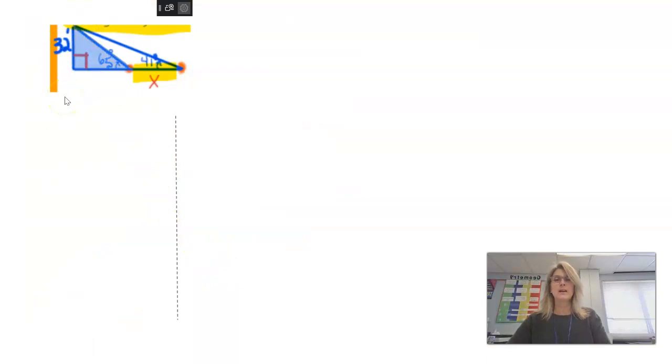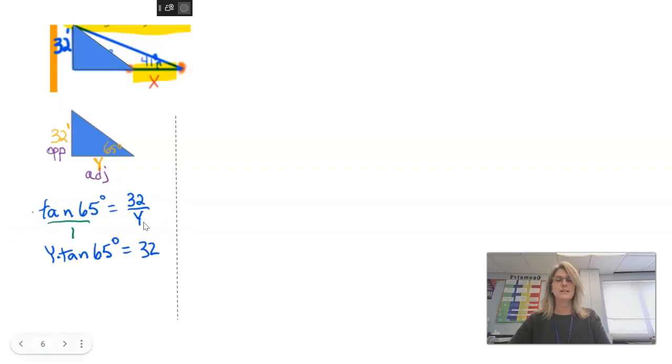So let's start with the problem again. Let's start with what we know, the blue triangle first. And then we'll do the second triangle next, so the blue triangle. Let's set up, we've got angle of elevation 65. I want to find that horizontal distance. I know the flagpole is 32 feet. So I'm labeling the sides, y and 32 feet are my adjacent and opposite. I'm going to use tangent. Tangent of 65 degrees is 32 over y. So make your cross products.